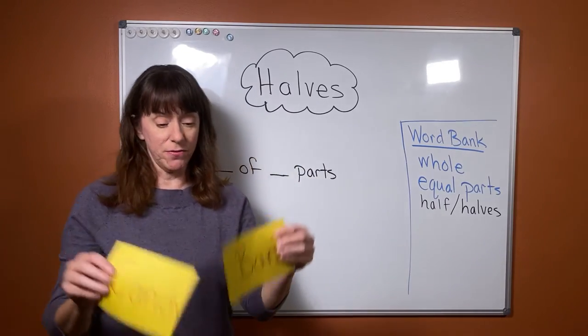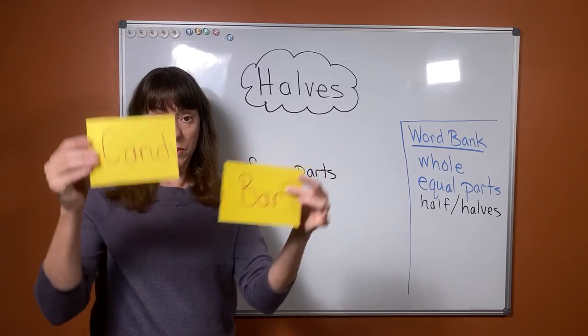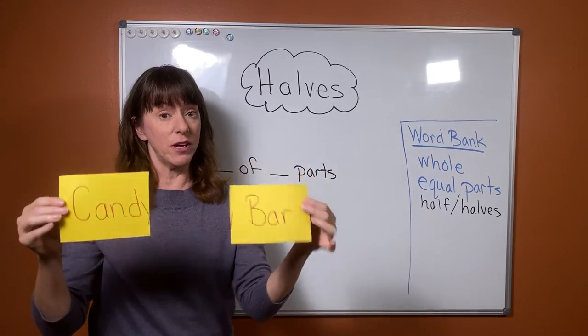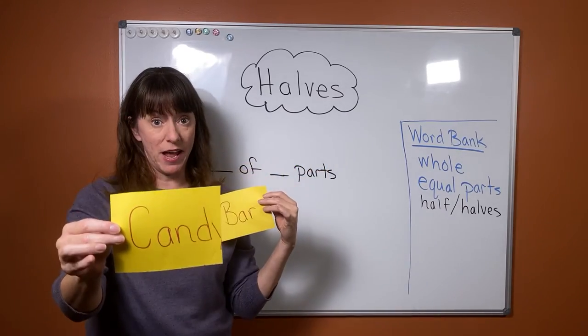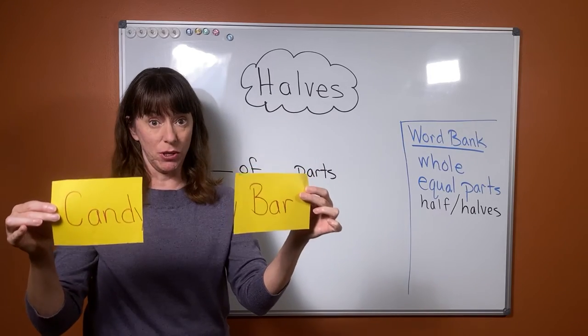Same thing with our rectangle shape. If it's a whole broken into two parts, we call those halves. One half, two halves. And they do have to be equal parts.